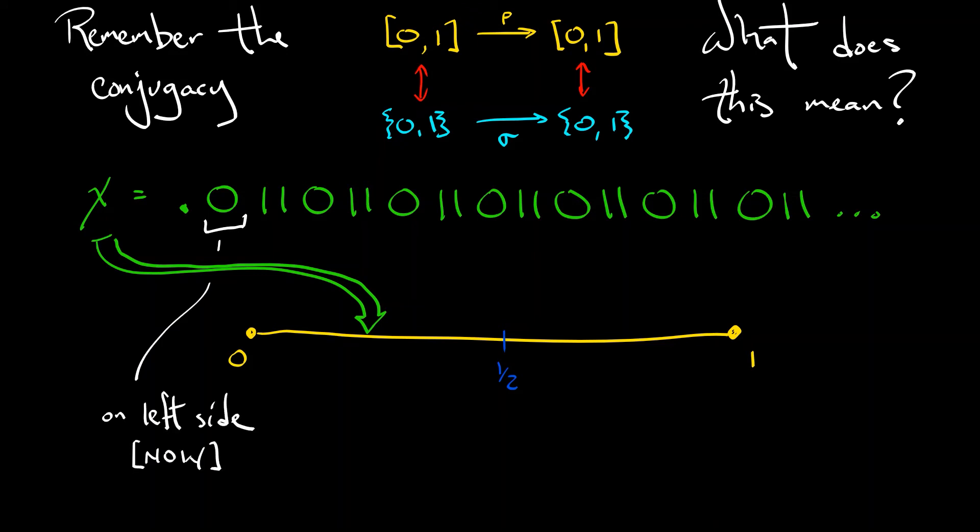And all the additional decimals in that expansion are telling you something about the future, because the dynamics is really the shift map. So what you're really seeing when you write out that sequence of zeros and ones is a picture of what the future of this orbit looks like. So what this means in particular is that with the symbol sequence that I've written down, 011, 011, 011, 011, this is really a period three orbit, assuming that repeating decimal structure exists.